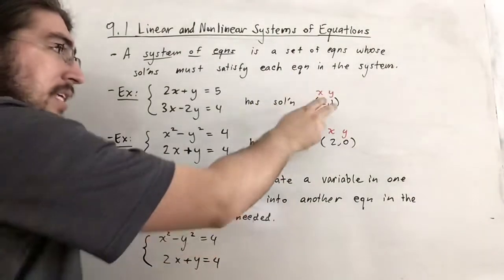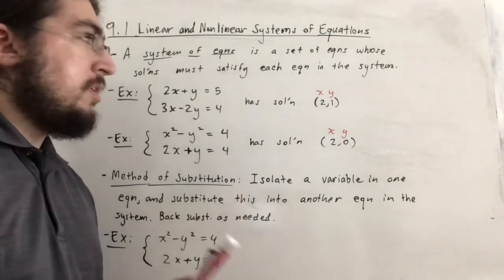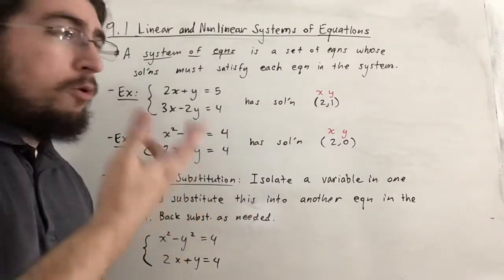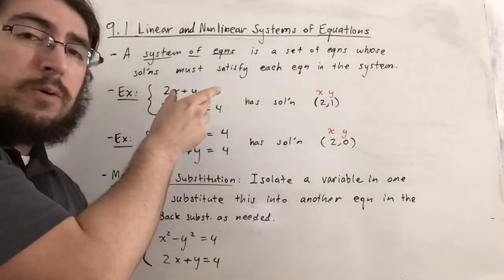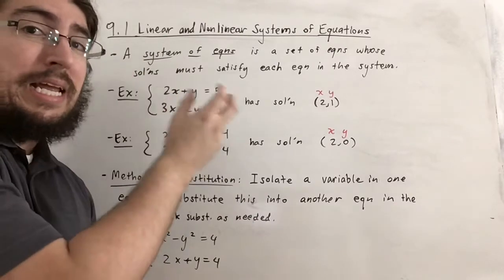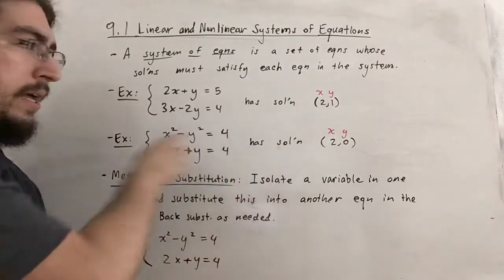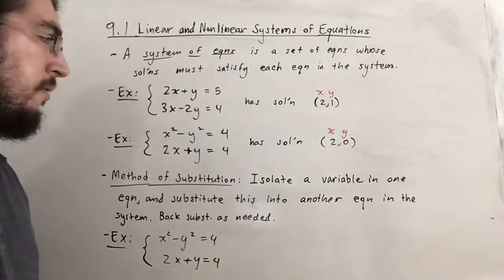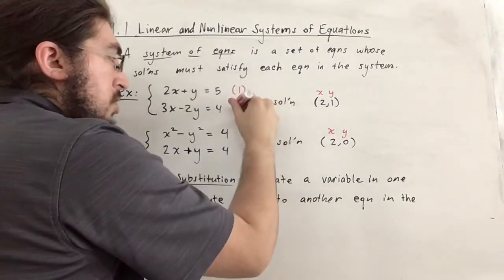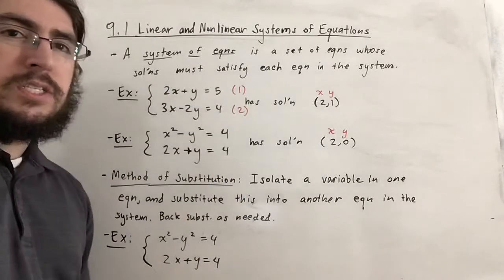Since this is a solution to both equations in the system, it is a solution to the system. Just because a point or ordered pair would satisfy one of the equations doesn't necessarily mean it's a solution to the entire system — it has to work for all equations. A common notation is to write (1) and (2) in parentheses to denote the equation number.